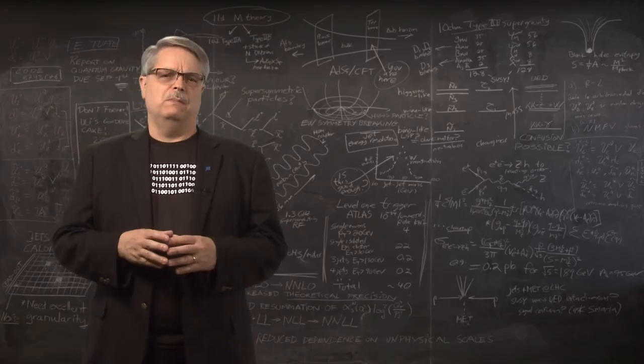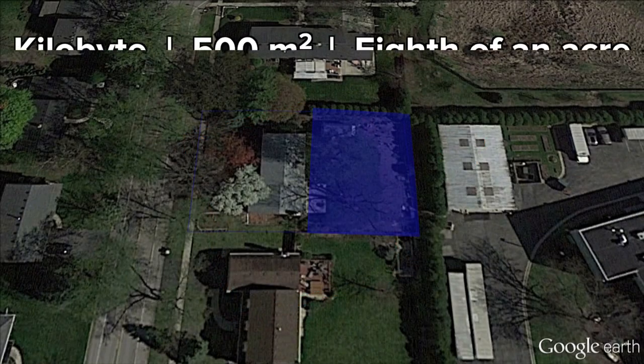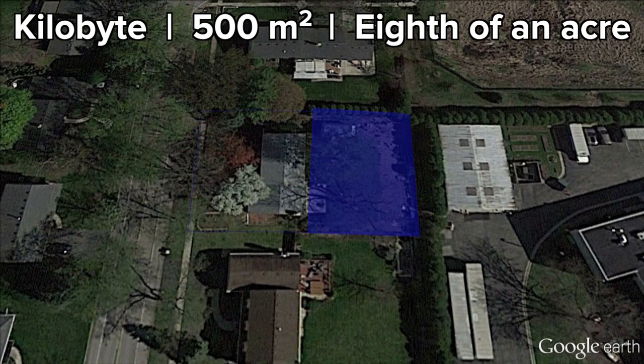So how big is a petabyte? Suppose that we represent a single byte by a floor tile that is half a square meter. That's a square 70 centimeters on a side, or a little over two feet square for my American viewers. A kilobyte is then 500 square meters, which is an eighth of an acre, or half the size of the parcel of land your house sits on if you're a typical American suburban homeowner with a quarter acre lot.